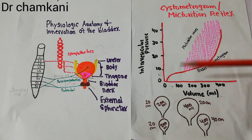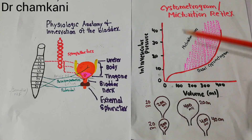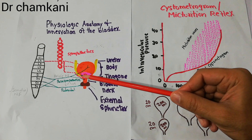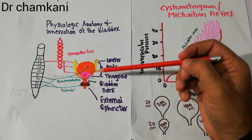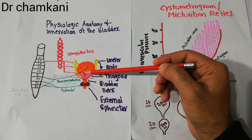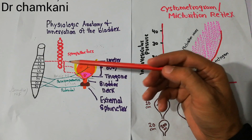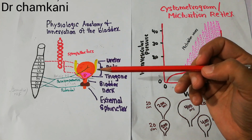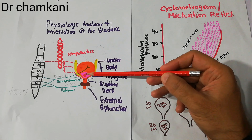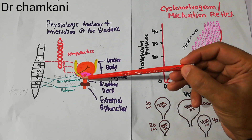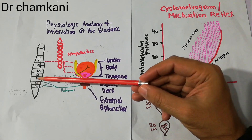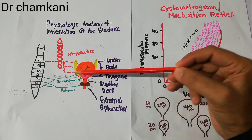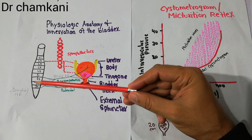Coming back to the micturition reflex: it is initiated by sensory stretch receptors present on the posterior wall of the urinary bladder, especially in the posterior urethra. When urine touches this area, it stretches the bladder wall and the stretch receptors there. These sensory receptors send signals through the pelvic nerve to the sacral segment of the spinal cord. The spinal cord in turn sends motor signals back through the pelvic nerve via parasympathetic fibers to the urinary bladder, causing it to contract.